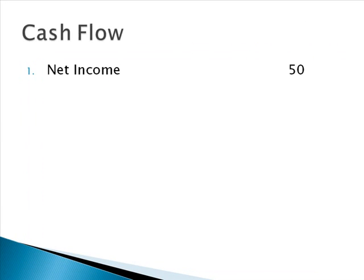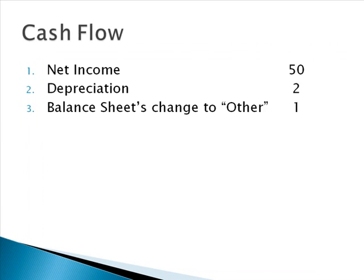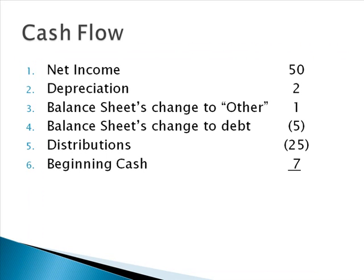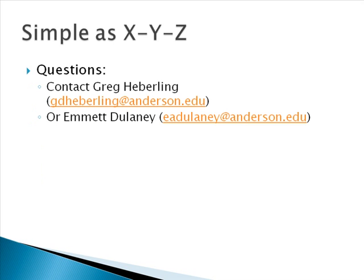Doing a double check: we had net income of 50, depreciation of 2, balance sheet change to other of 1 — and note this is now a positive number, not a negative. Balance sheet change to debt of 5, distributions of 25, and beginning cash was 7. Thus our total cash is equal to 30. We can see three very simple examples of how to walk through and do the closing balance sheet using the XYZ approach. Hopefully this information was helpful.